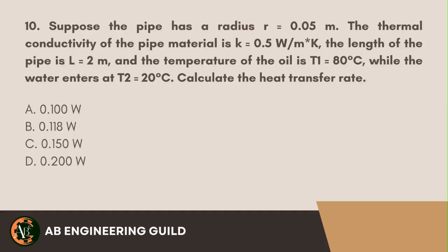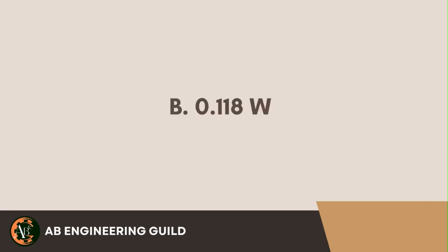Question 10: Suppose we have a pipe with a radius of 0.05 meters. The thermal conductivity of the pipe material is 0.5 watts per meter kelvin, and the length of the pipe is 2 meters. The temperature of the oil flowing through the pipe is 80°C, while the temperature of the water surrounding the pipe is 20°C. Calculate the heat transfer rate. A. 0.100 watts. B. 0.118 watts. C. 0.150 watts. D. 0.200 watts. Answer: B. 0.118 watts.